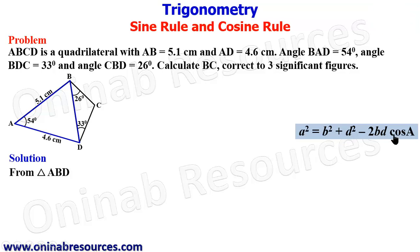So substituting, we have BD squared equals B squared, 4.6 squared, plus D squared, that is 5.1 squared, minus 2 times 4.6 times 5.1, then multiply by cos 54 degrees.